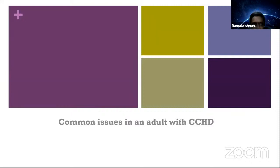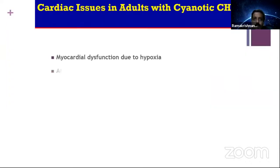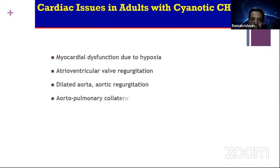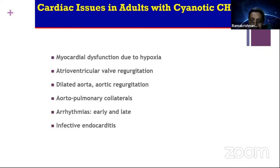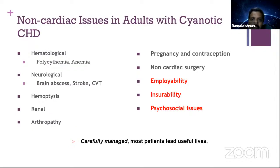From an approach standpoint, a common area you should know about is the common issues in adults with CCHD. This is very commonly asked: enumerate the various difficulties faced by patients with cyanosis in adults. Cardiac issues: myocardial dysfunction due to hypoxia, AV valve regurgitation, dilated aorta and aortic regurgitation, aortopulmonary collaterals, arrhythmias — both early and late, including postoperative arrhythmias — and infective endocarditis.